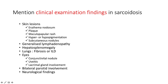Also lupus pernio as discussed, hypo- and/or hyperpigmentation, and subcutaneous nodules. You can also have generalized lymphadenopathy and splenomegaly — involvement of the reticuloendothelial system. The lungs are a major domain in sarcoidosis, falling under the pulmonologist, as it causes fibrosis and interstitial lung disease.